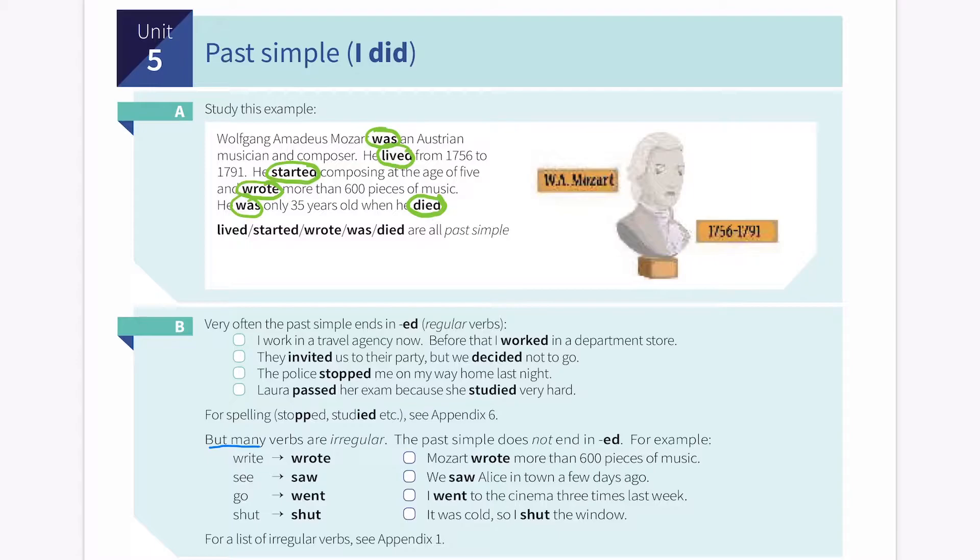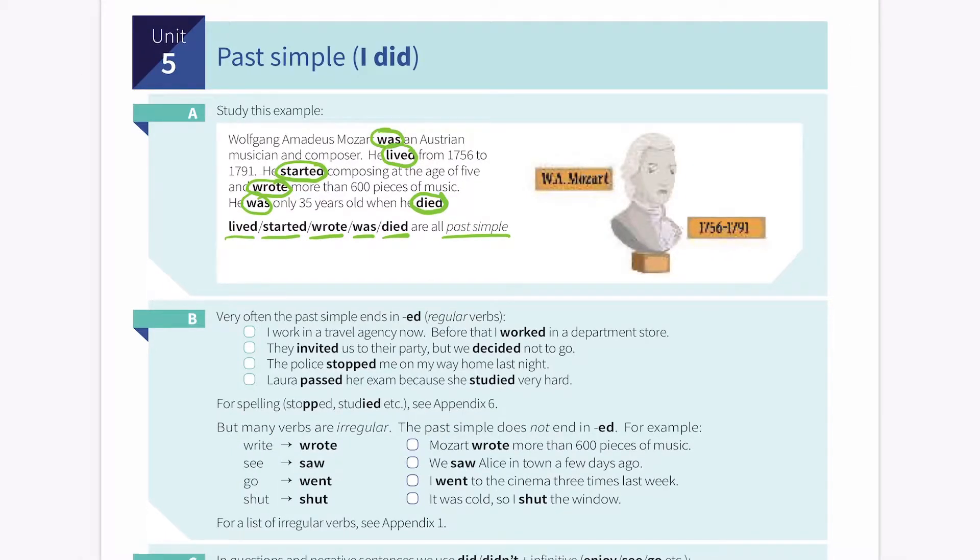Lived, started, wrote, was, died are all past simple. Let's move on to B next. Very often the past simple ends in ED. For regular verbs.